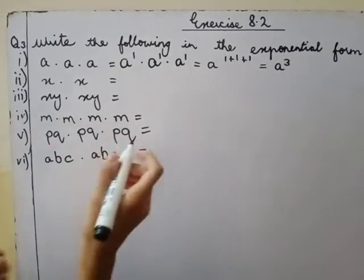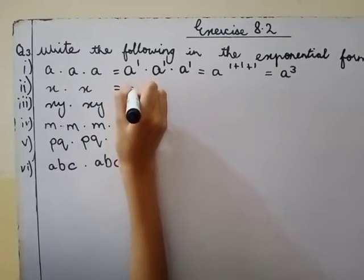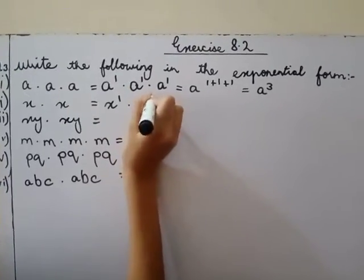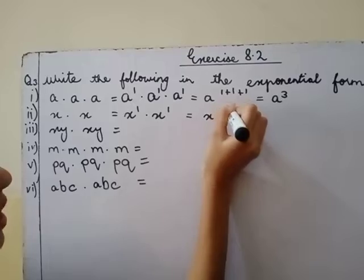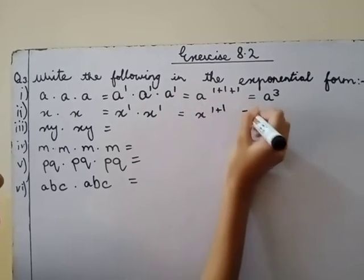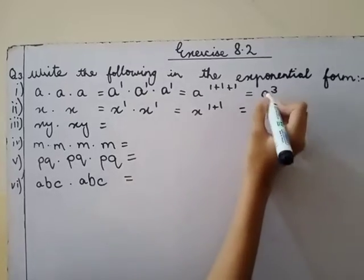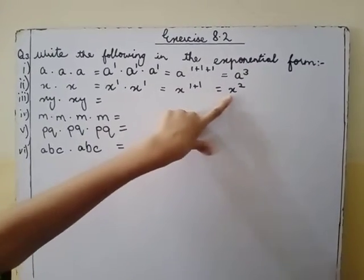Now the second part is x point x. x one, x one. This equals to x one plus one, one plus one is two, means x squared. That was a cube and this is x squared.